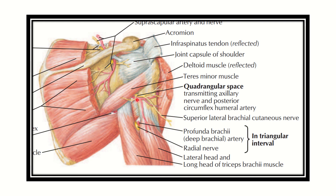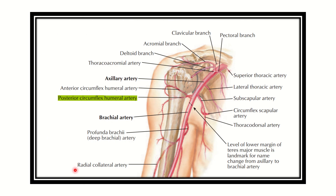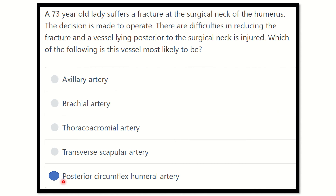This artery is the posterior circumflex humeral artery. It is very clear in this picture: at the surgical neck we can see the posterior circumflex humeral artery. So our final answer is the posterior circumflex humeral artery. It lies posterior to the surgical neck and may be damaged or injured during fracture of the surgical neck or during the operating procedure to reduce the fracture. Thank you all.